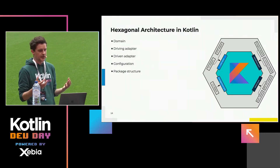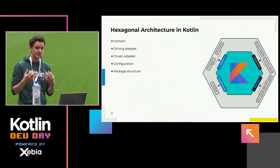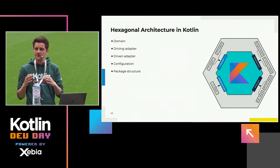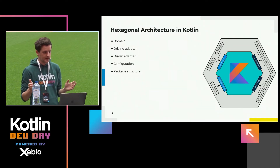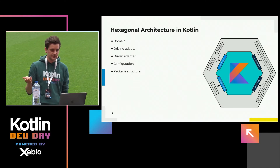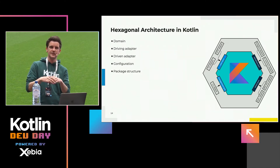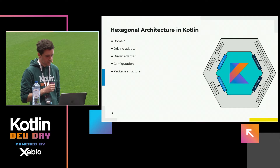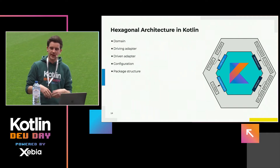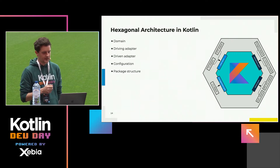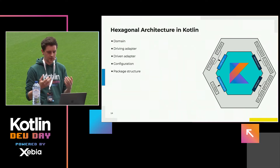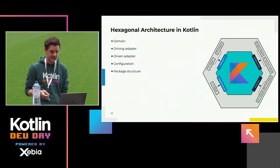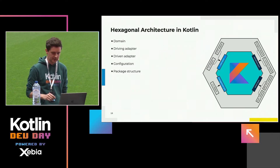Let's take a look at how hexagonal architecture is built, starting from within — the domain code. Then we will add a driving adapter so we can execute our code, a driven adapter so the result can be stored, and configuration to wire everything together. Finally, I'll tell you about the package structure — how you can organize your code so this pattern is expressed in your code base, and how you can enforce it.